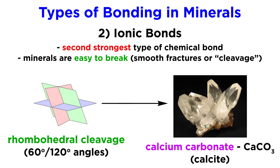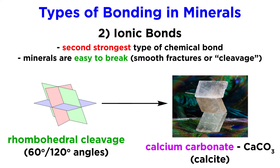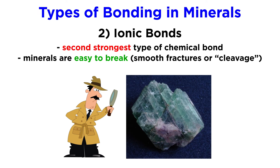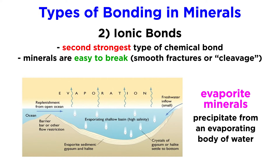Calcite, or calcium carbonate, exhibits rhombohedral cleavage, where the mineral breaks along planes at 60 and 120 degree angles, creating miniature rhombohedrons when fractured. Characterization of cleavage is an excellent way to identify minerals in hand samples, especially in the field. Most of Earth's ionically bonded minerals are evaporite minerals, meaning they precipitate from an evaporating body of water, such as a lake or sea.